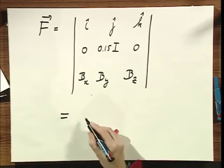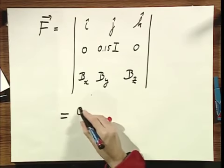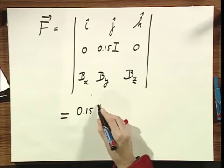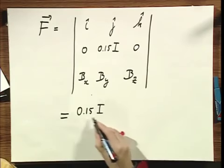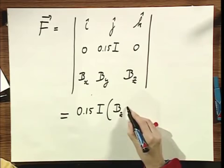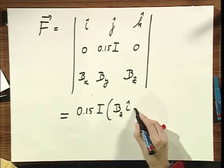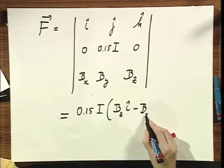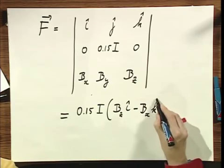And this, I'm sure you will be able to work that out for yourself, is 0.15 (this was the length I think of the wire) times Bz in the x direction minus Bx in the z direction.